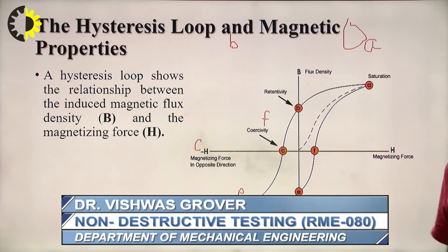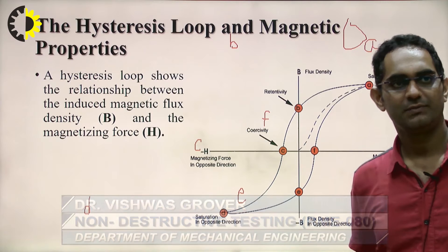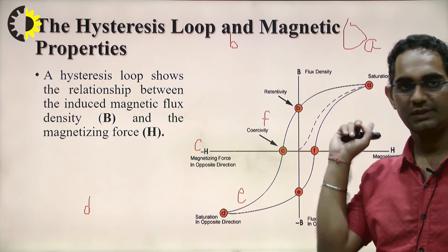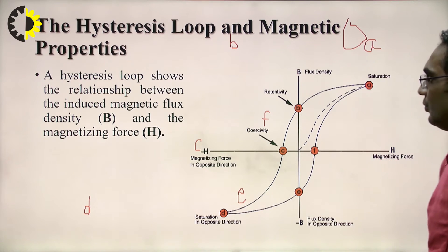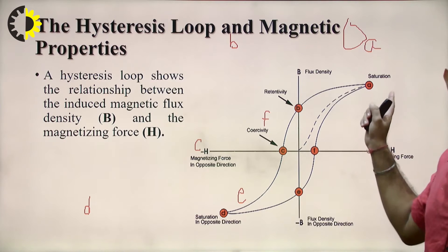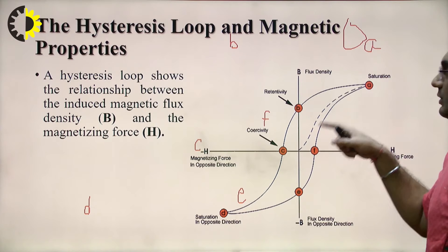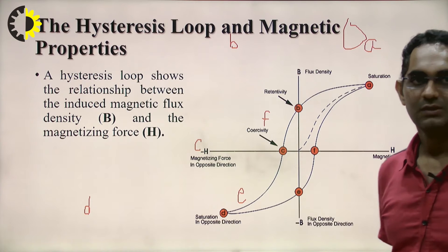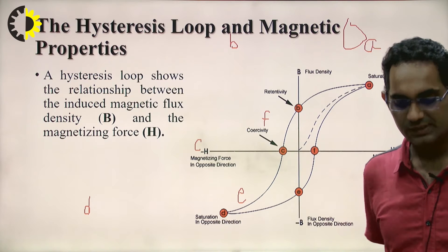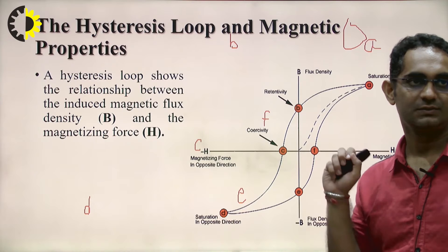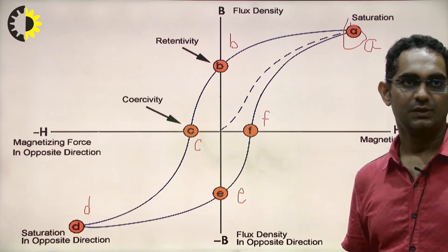We have discussed the hysteresis loop, including the saturation point and the coercivity. Today we will discuss the different terms regarding this hysteresis loop and the magnetic properties.